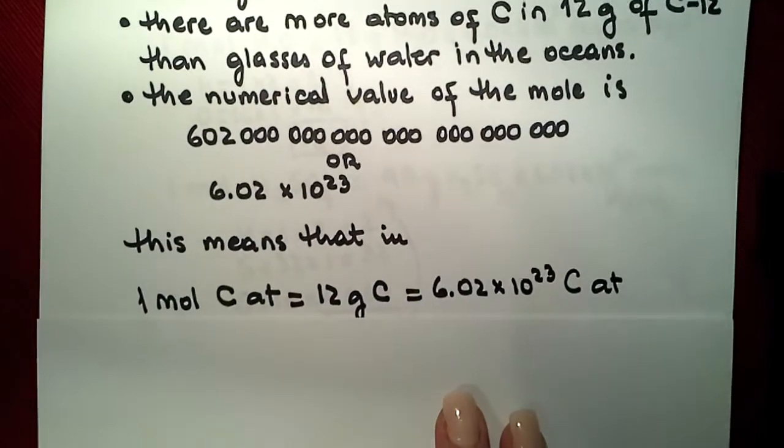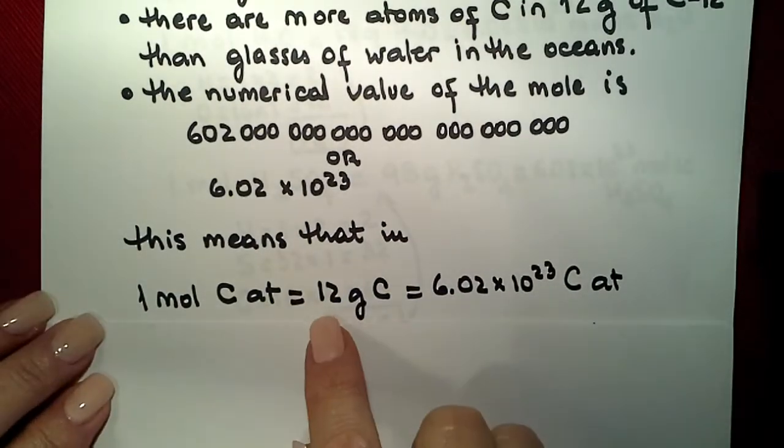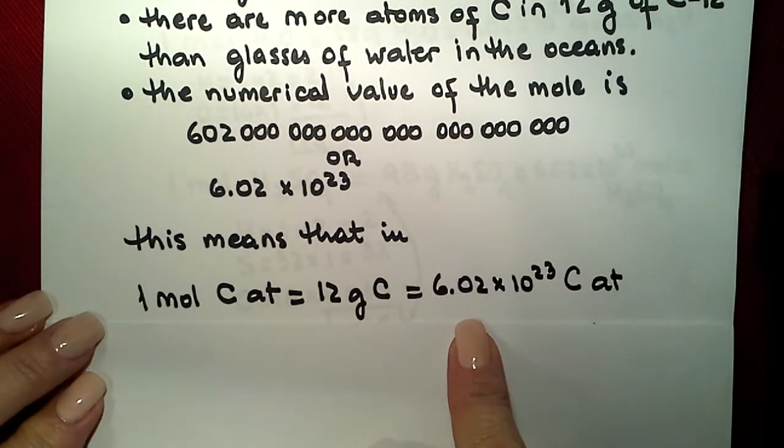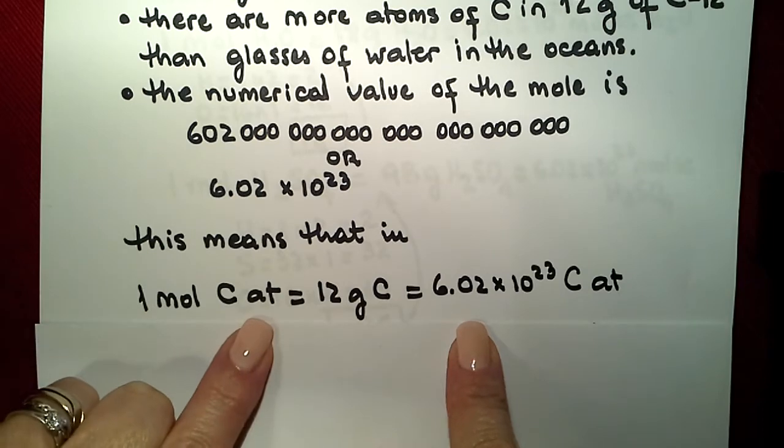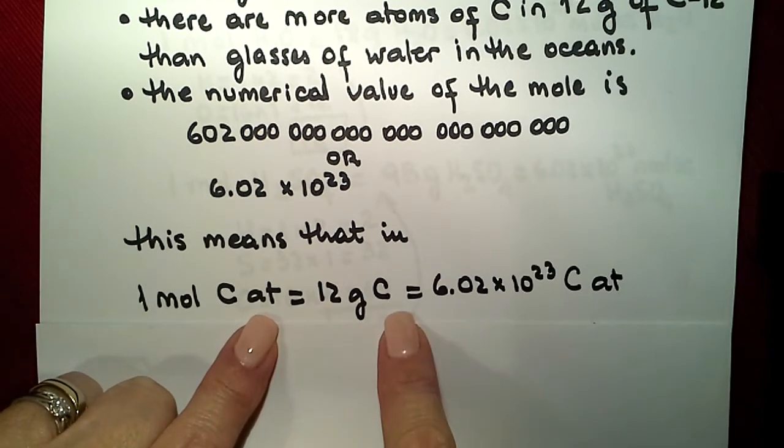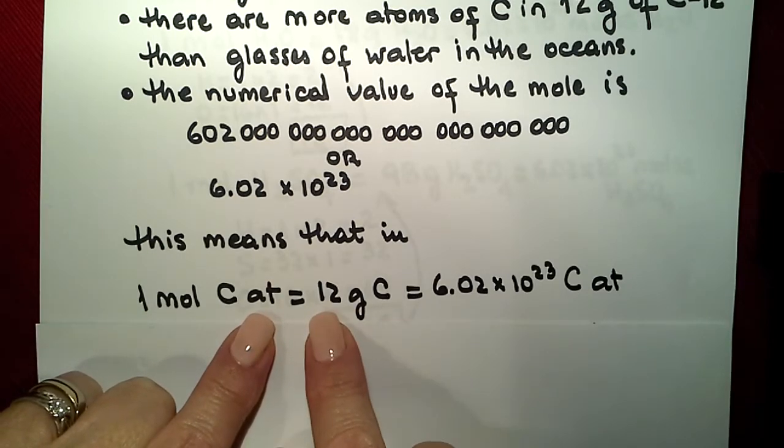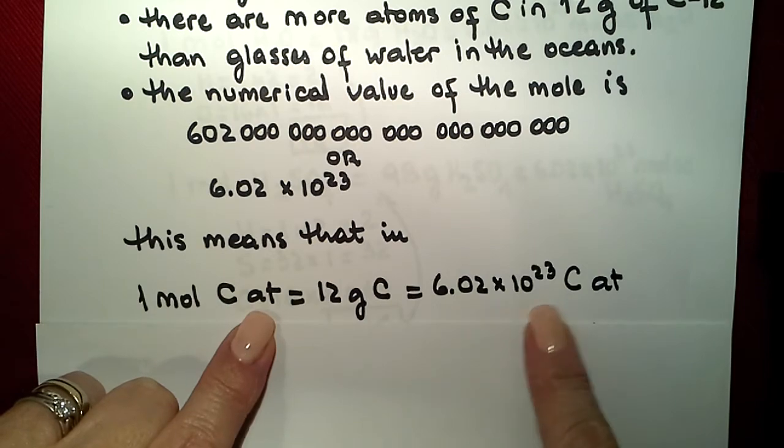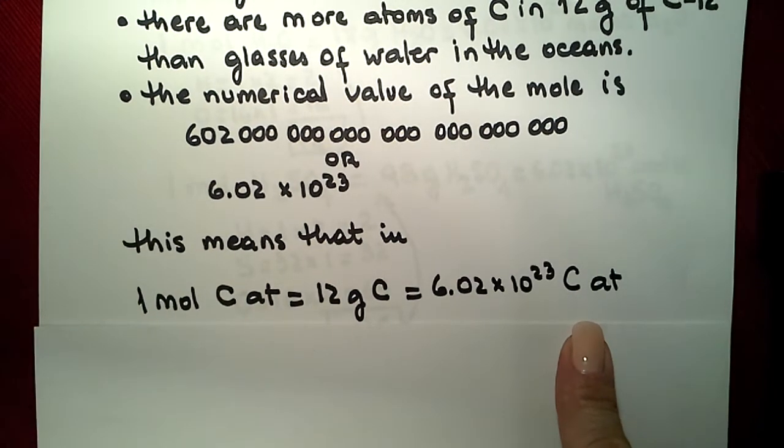What does that mean? That means that if we get 12 grams of carbon, we can count the amount of atoms that we have. It actually is this number. One mole of carbon atoms is going to be equal to 12 grams because this is the mass in the periodic table expressing grams. And that is going to contain 6.02 times 10 to the 23rd atoms of carbon.